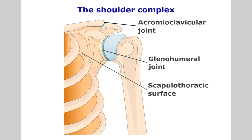The scapulothoracic joint is formed by a muscular articulation between the anterior surface of the scapula and the posterior thoracic wall. It derives support primarily from the serratus anterior muscles and also from muscles attaching to the scapula.